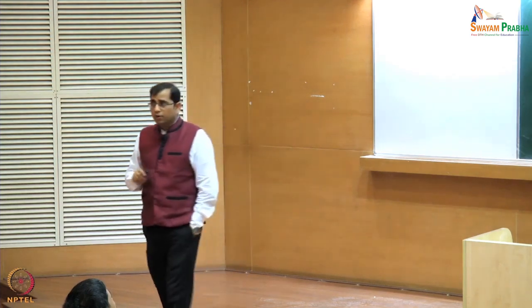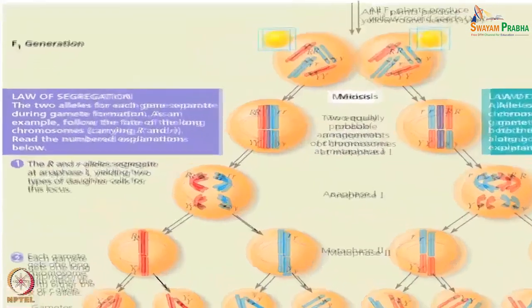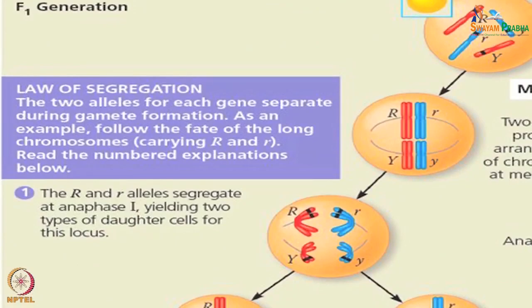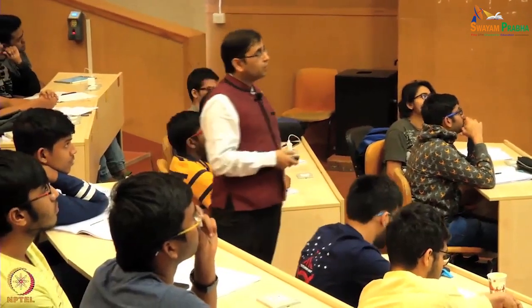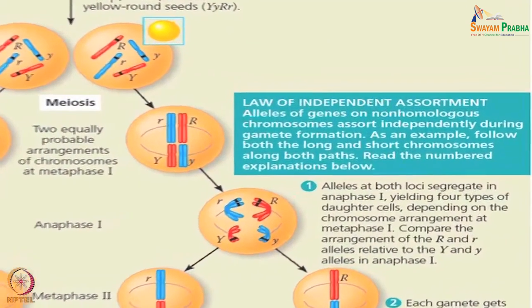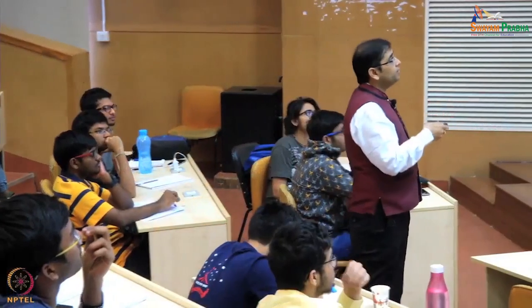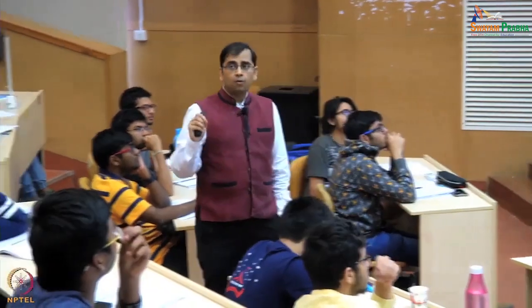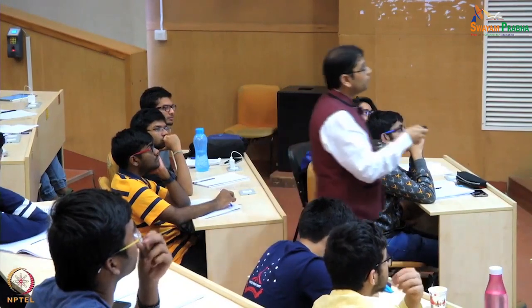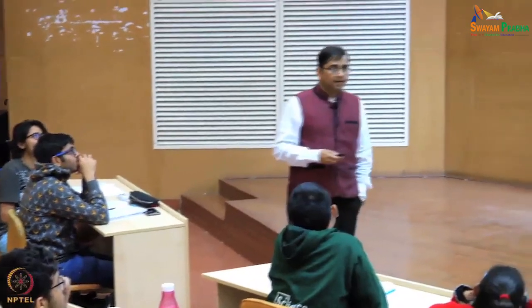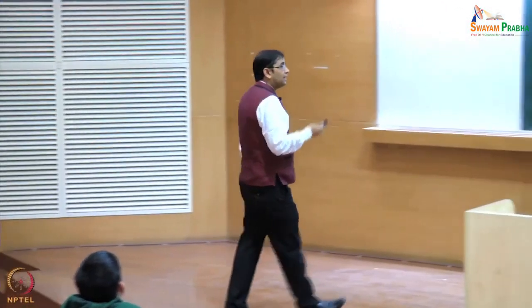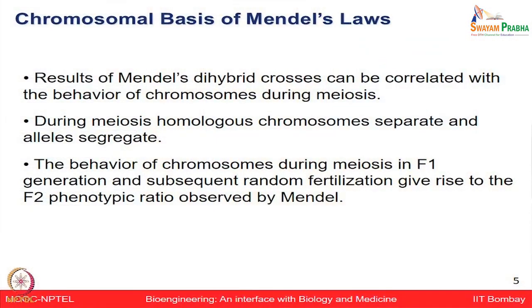Genes are located on chromosomes, and what is the behavior of these chromosomes during the meiosis process, and whether Mendel's law of segregation and independent assortment is also valid as part of the chromosomal basis of separation? As part of the law of segregation, the two alleles for each of these genes will separate during gamete formation, which you can follow from the meiotic process. And the law of independent assortment means alleles of genes on non-homologous chromosomes would assort independently during gamete formation.